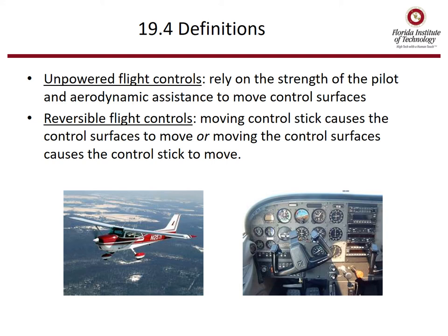Next, we'll talk about flight control systems. Unpowered flight controls rely on the strength of the pilot and aerodynamic assistance to move control surfaces — there's no hydraulics and no fly-by-wire. A reversible flight control system means that if you move the control stick, it causes the control surface to move, or vice versa. Reversible flight control systems are typically what we see in general aviation aircraft.